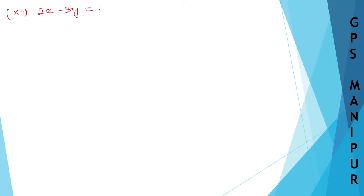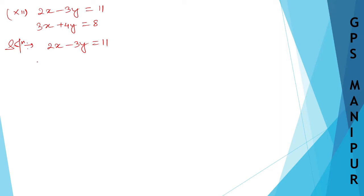We are doing exercise 4.2, question number one, Roman number 12. We have 2x minus 3y is equal to 11 — this is equation number one — and 3x plus 4y is equal to 8 — this is equation number two.